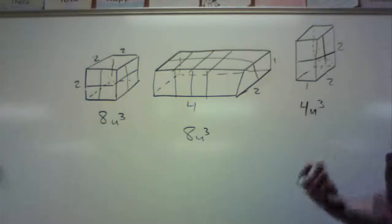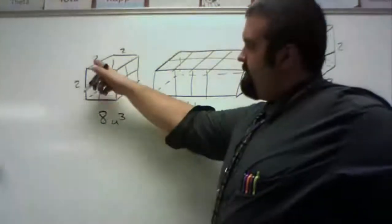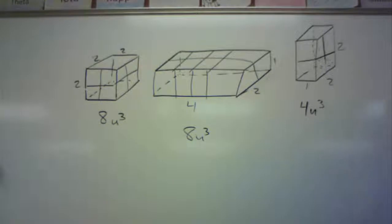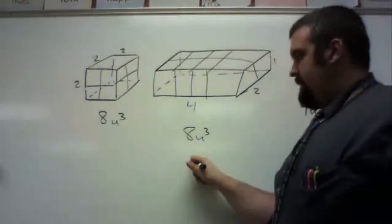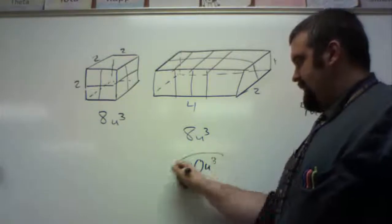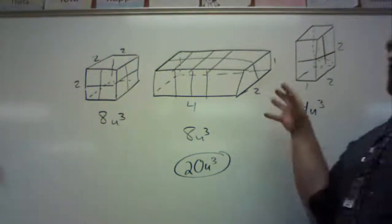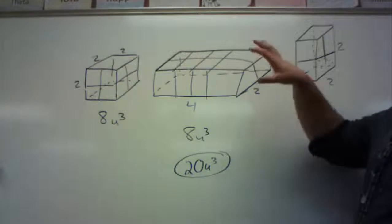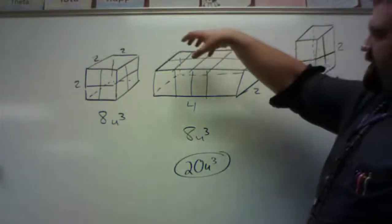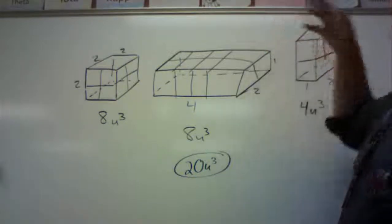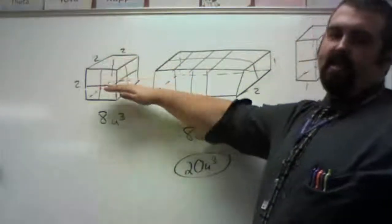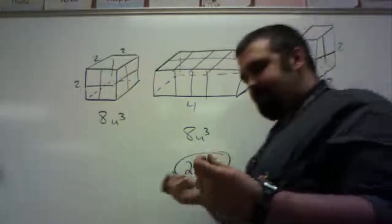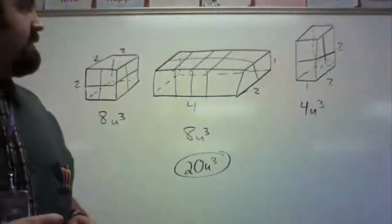The way to find the volume of these rectangular prisms was length times width times height. Two times two times two is eight. Four times two times one is eight. One times two times two is four. The volume here ends up being 20 cubic units. So there's a few ways you could have done this: you break it up into parts, or you can visualize it and say, I see four in the front row, four in the back — so eight total. This is two layers of four on top of each other, and this is one layer of four vertically stacked. That's volume.